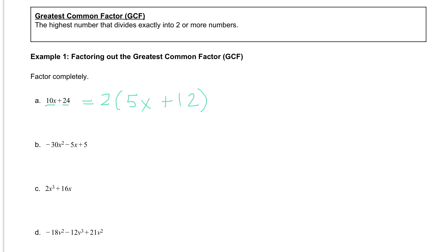What I would do after you factor it completely is go back and check it — multiply it back out, distribute. 2 times 5x is 10x. 2 times 12 is 24. And then you know you've done it correctly.